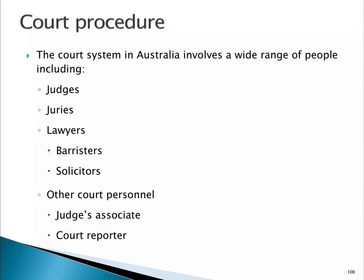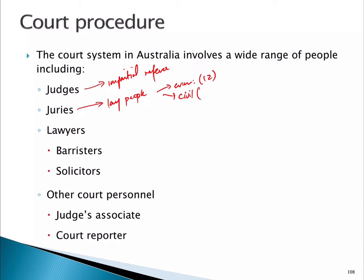If you were to walk into a courtroom in Australia, you'd see many different people. There'll be the judges — our impartial referee. In some courts you will see a jury, a panel of lay people. If it's a criminal matter, there'll be 12 jurors. If it's a civil matter, civil juries are unusual but do sometimes occur, and there are generally six, although that number can vary — sometimes four, depending on the case.